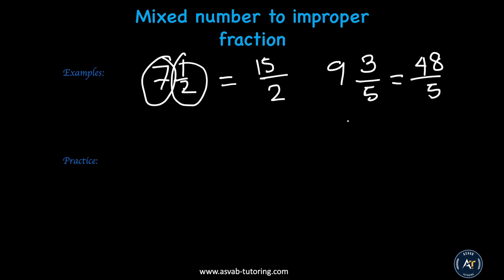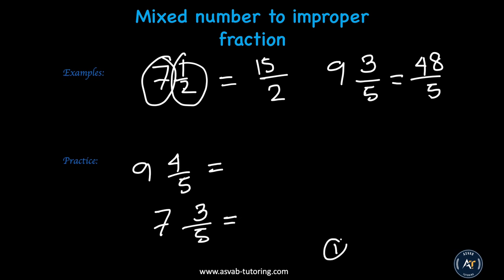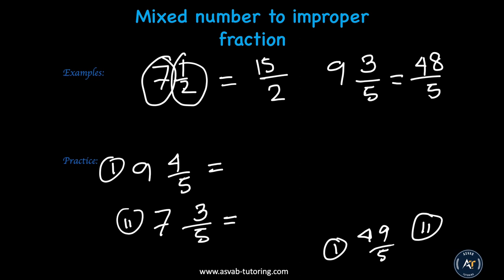Now it's your turn. Try these: 9 and 4 fifths — what is the improper fraction? And 7 and 3 over 5. The answers are: number 1 — 9 times 5 is 45, plus 4 is 49 over 5. Number 2 — 7 times 5 is 35, plus 3 is 38 over 5.